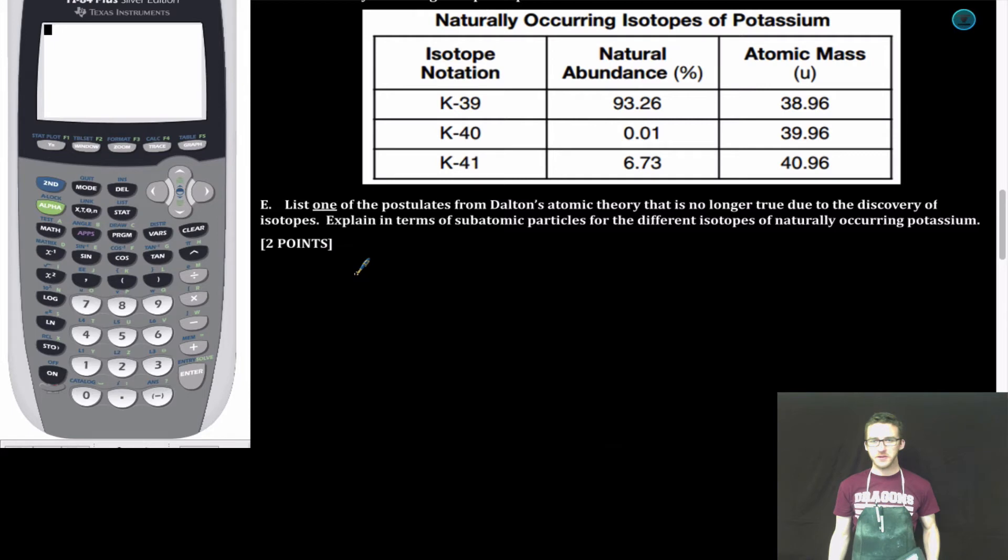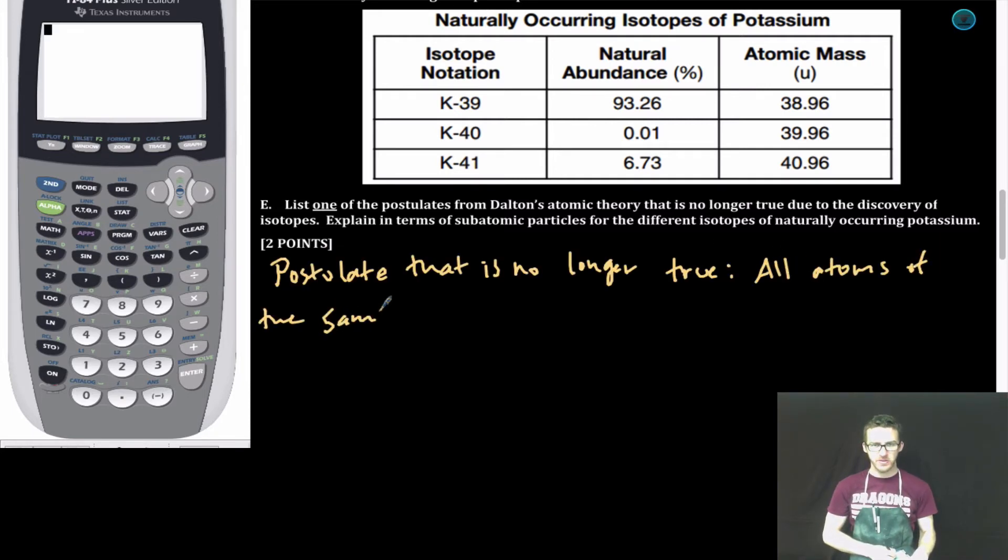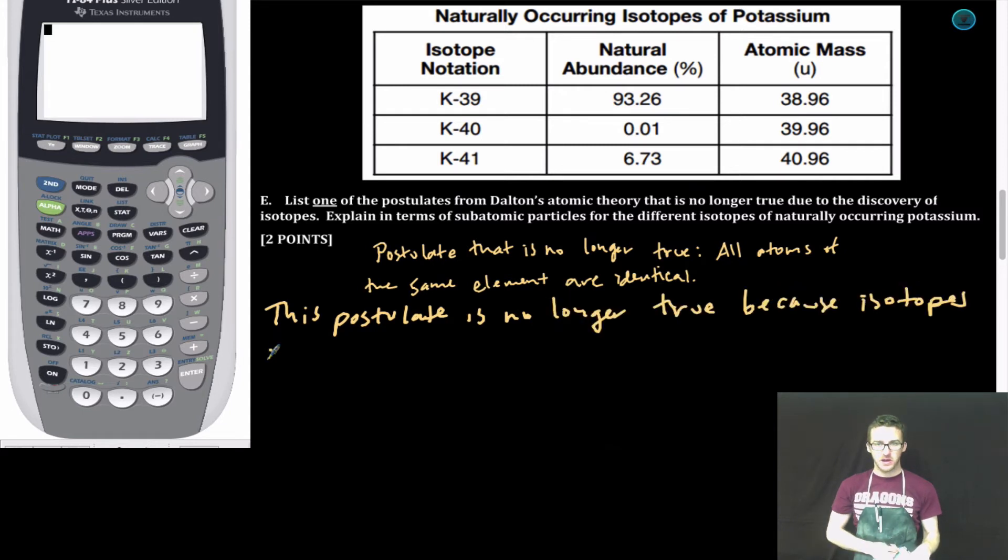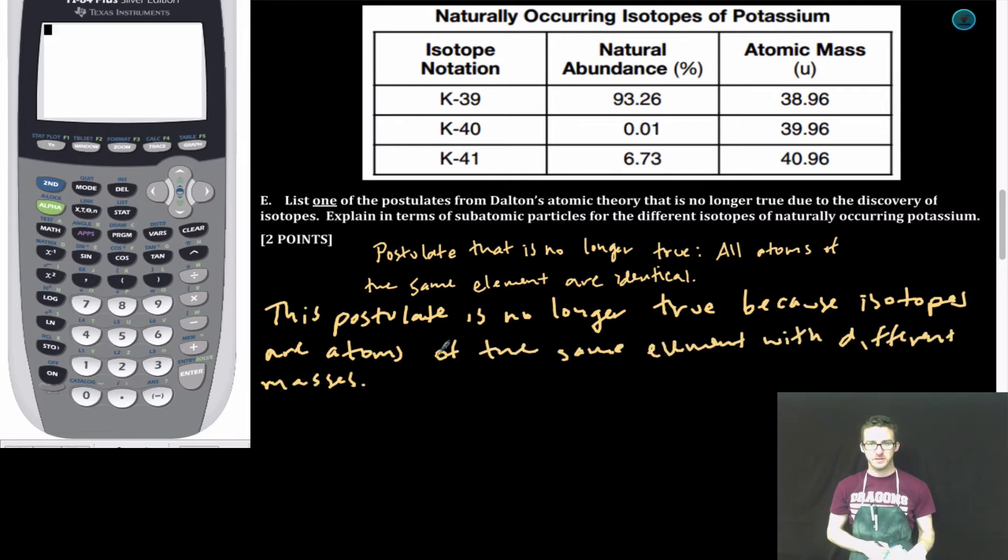Let's list out this postulate that's no longer true. All atoms of the same element are identical. Nice try Dalton, but that's no longer correct. This postulate is no longer true because isotopes are atoms of the same element with different masses.